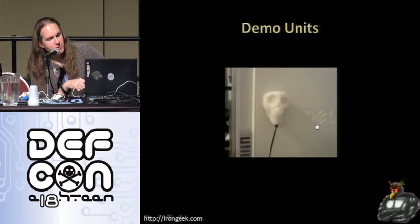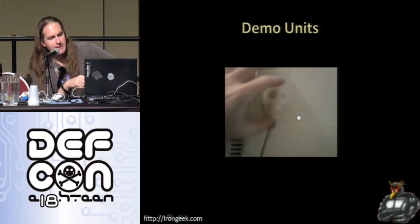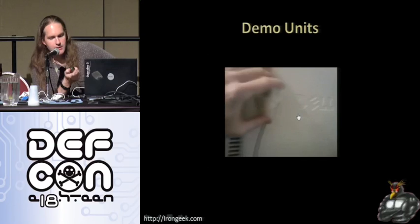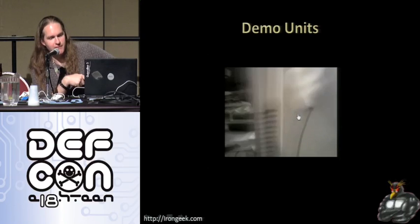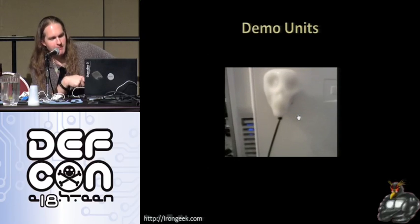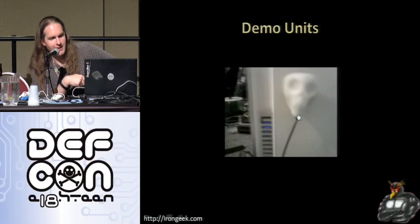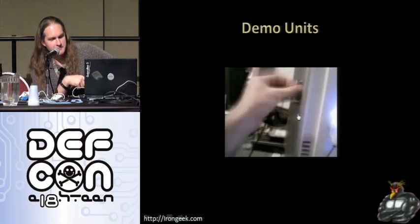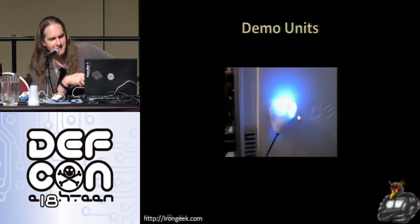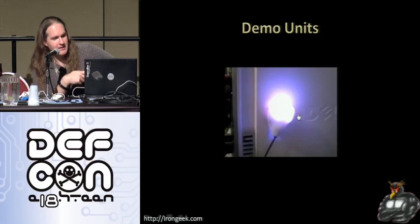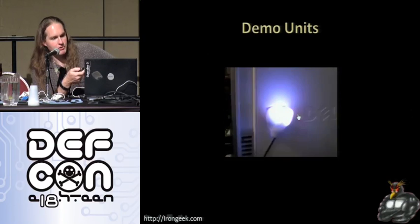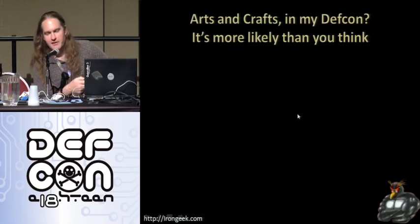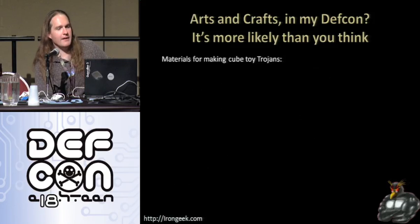Another thing I made — I'm not much of a sculptor but I'm getting better. For some reason I can sculpt skulls. This is another little trojan device you can give to someone as a desk toy. Basically it's a little skull where the eyeballs flash different colors. That one I made out of something called ShapeLock, which I'll talk about in a second. Arts and crafts at DEF CON — more likely than you think.